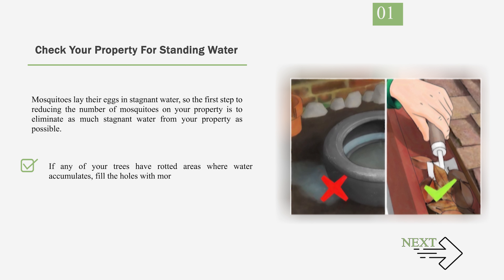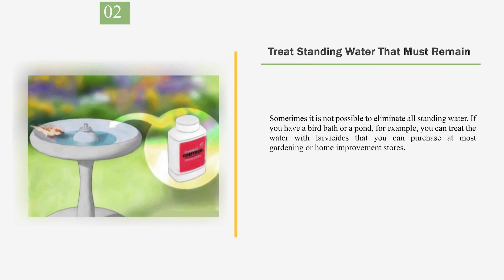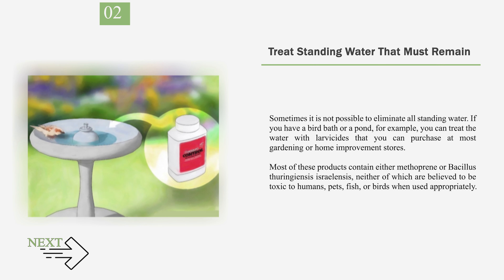If any of your trees have rotted areas where water accumulates, fill the holes with mortar. Number 2: Treat standing water that must remain. Sometimes it is not possible to eliminate all standing water. If you have a bird bath or a pond, for example, you can treat the water with larvicides that you can purchase at most gardening or home improvement stores.